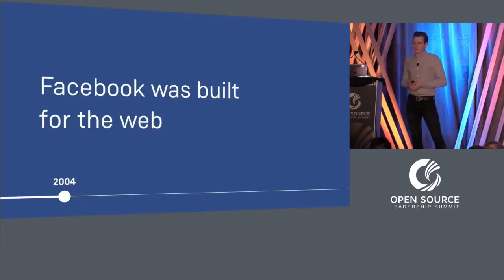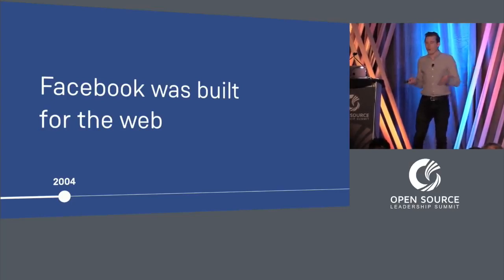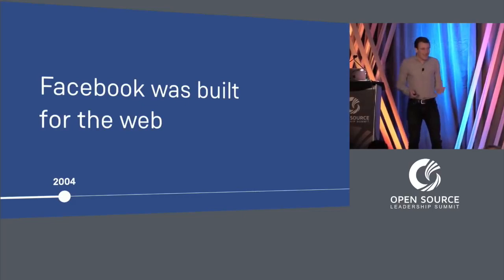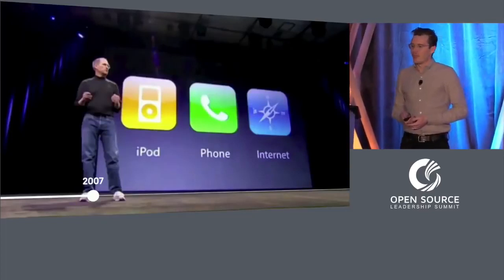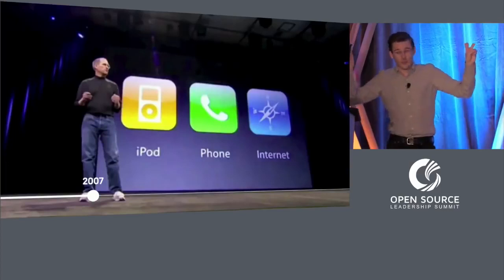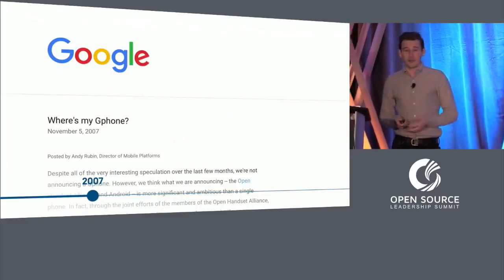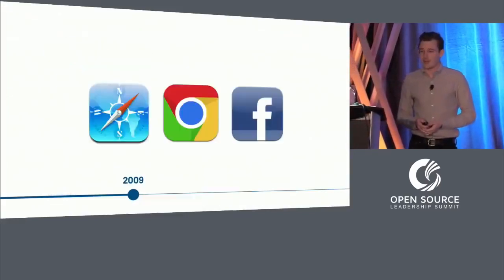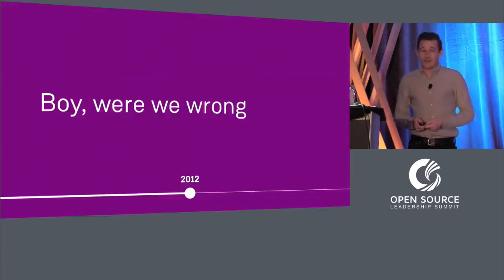Facebook was built for the web. Even our native mobile apps were really just thin wrappers around our Facebook mobile website. We bet big on the web. I remember when Steve Jobs introduced the iPhone in 2007 — he called it a breakthrough internet communication device, and made sure Safari, the best web browser in the world, was running on iPhone. Then Google, the biggest name in web and the creators of Chrome, responded with Android later that same year. And we thought these two are going to compete on having the best mobile web browsers, and we're going to build the best mobile web experience.